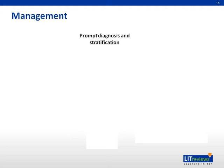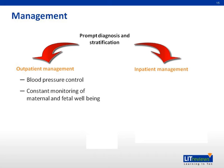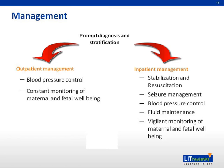Prompt diagnosis and risk stratification is paramount in the management of hypertensive disorders in pregnancy. In many occasions, these patients may be adequately managed as outpatients, but patients with greater risk profile or with more severe spectrum of disease may benefit from inpatient monitoring and management. The goals of outpatient therapy are blood pressure control and constant monitoring of maternal and fetal well-being. The goals of inpatient therapy are stabilization and resuscitation of the patient, seizure management, blood pressure control, fluid maintenance, and vigilant monitoring of maternal and fetal well-being. The final and most definitive treatment for hypertensive disorders in pregnancy is delivery.